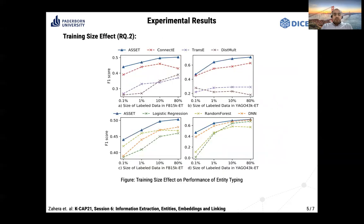For the second experiment, we evaluated performance given different ratios of labeled data. We tried 0.1%, 1%, 10%, and 80%. Our evaluation results show that our approach achieved significant improvements compared with baselines, particularly when we have very few training examples such as 0.1% or 1% of the data.